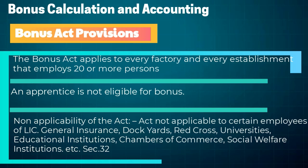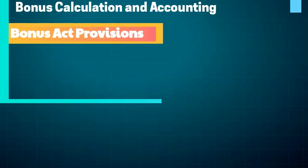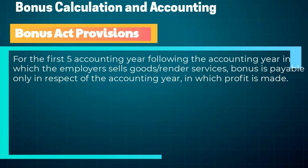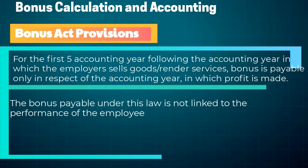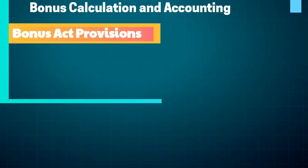The Act is not applicable to certain employees of LIC, General Insurance, Dockyards, Red Cross, universities, educational institutions, chambers of commerce, and social welfare institutions. For the first five accounting years following the accounting year in which the employer sells goods or renders services, bonus is payable only in respect of the accounting year in which profit is made.